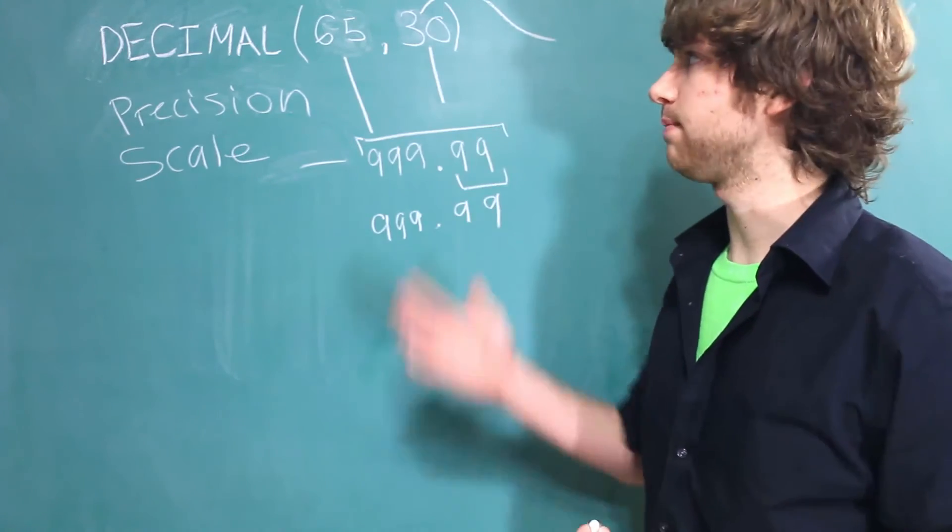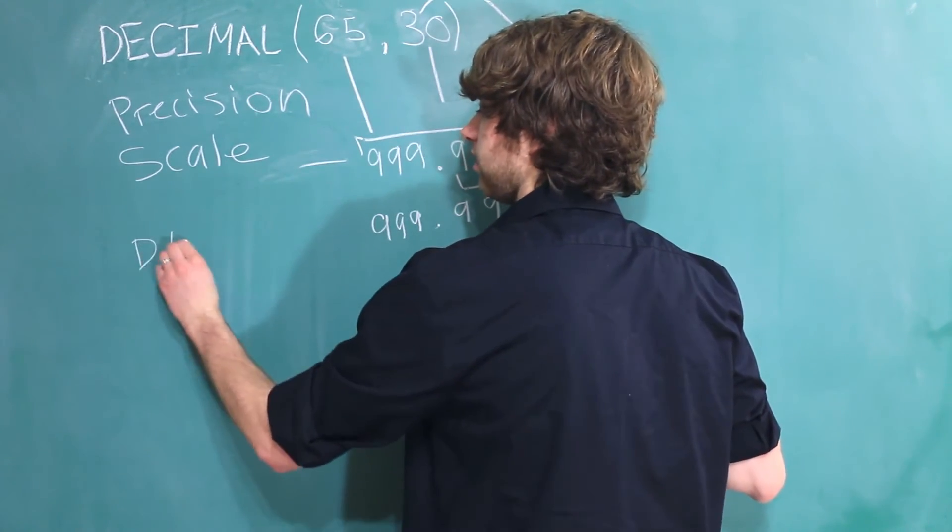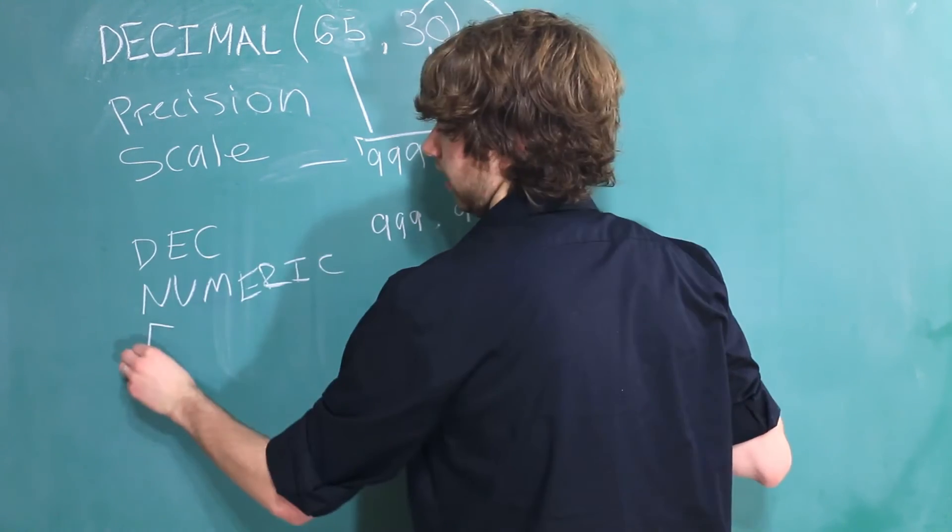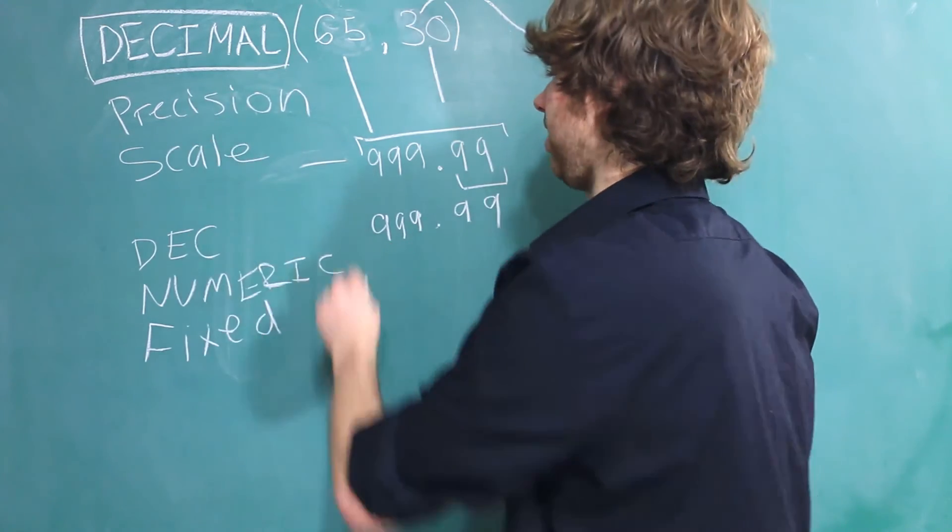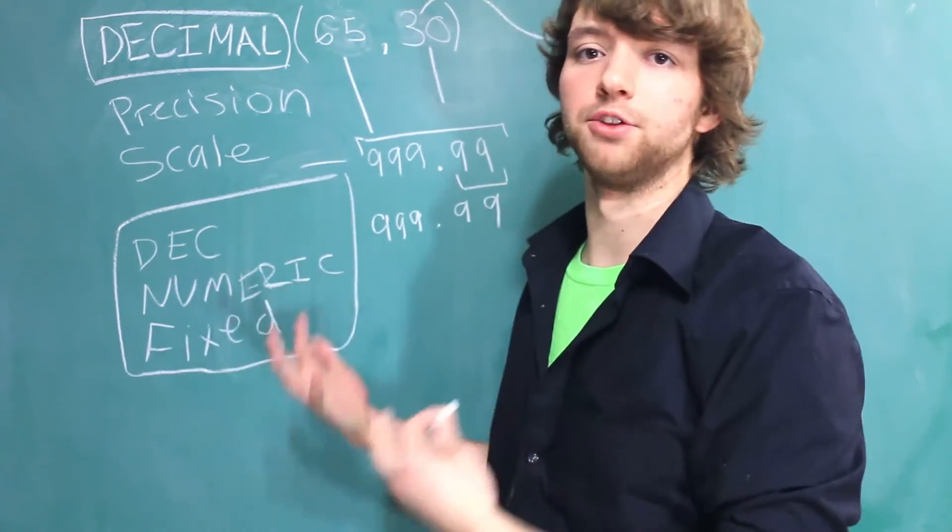There are actually a couple of different names for the decimal data type. For example, it can also be named DEC, NUMERIC, and FIXED. But in general, you're going to want to use this name. I think these are more for portability when we're talking about working with other databases.